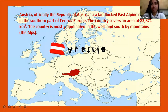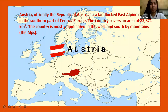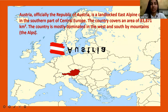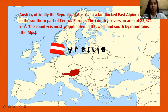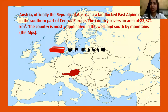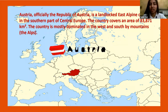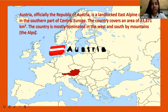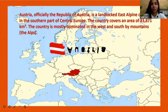Here you can see a picture of a world map, and the red highlighted area is the country Austria. Austria, which is officially called the Republic of Austria, is a landlocked east alpine country in the southern part of central Europe. It lies in the central southern part of Europe.